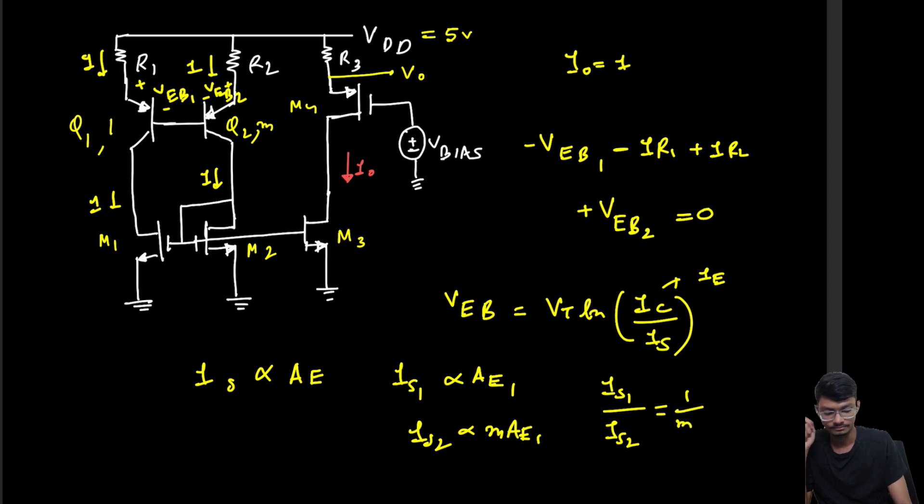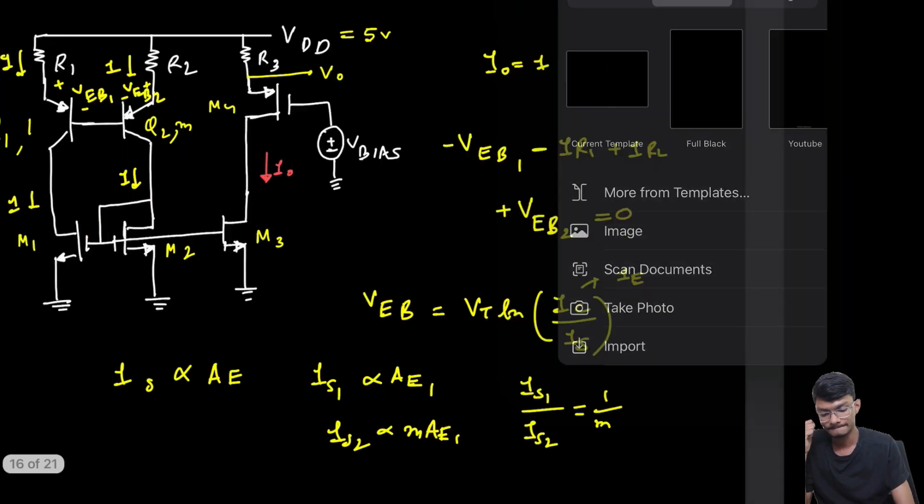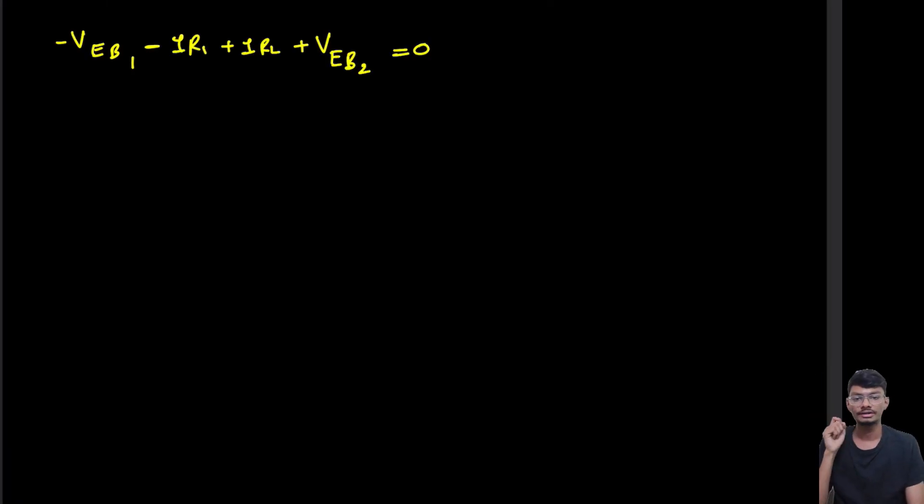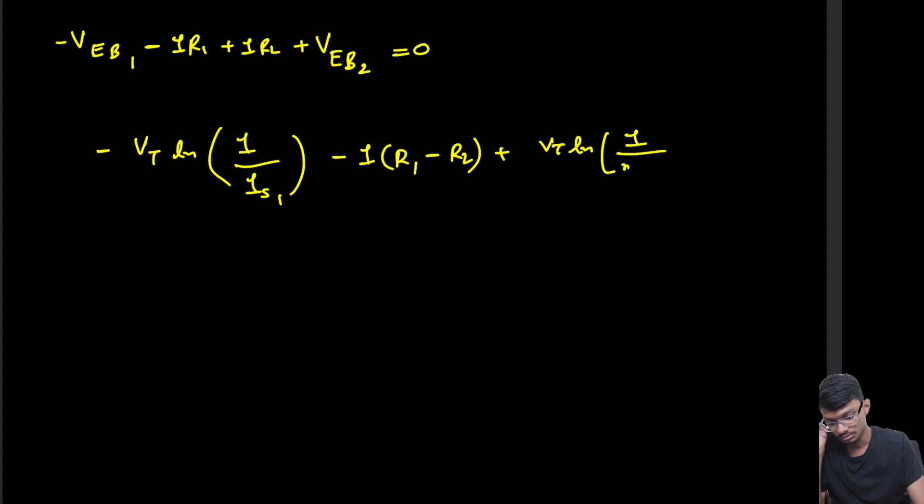Now we can rewrite the equation. What is VEB1? VEB1 is basically VT times ln(I/Is1). Taking I common: IR1 - IR2, plus VT ln(I/(m×Is1)) equals 0.